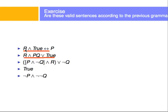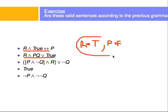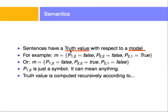For example, this might be an expression to evaluate, and a model might be: R is true, P is false. We call this expression a sentence, and the model helps us evaluate the sentence, telling us the truth values of the variables. Sentences have truth values with respect to a model.